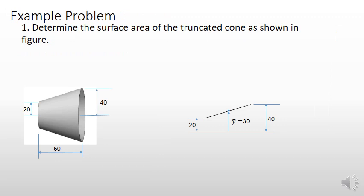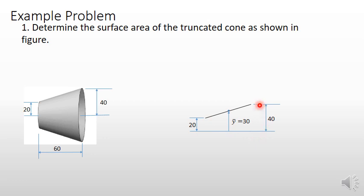Now let us take one example where we need to determine the surface area of a truncated cone as shown in the figure. The smaller radius is 20, the larger radius is 40, and the length of this truncated cone is 60. This cone can be obtained by revolving this slant line about this axis, where this distance is 20 and this distance is 40.